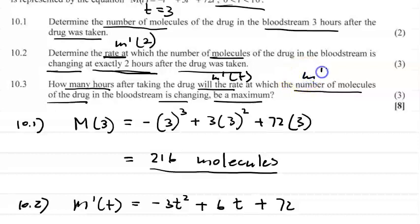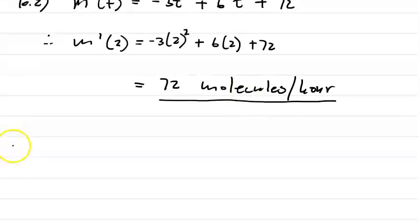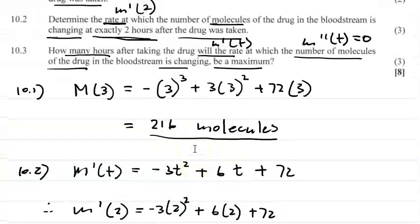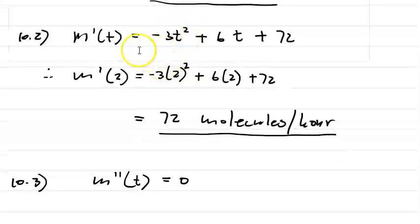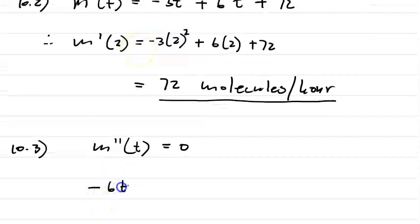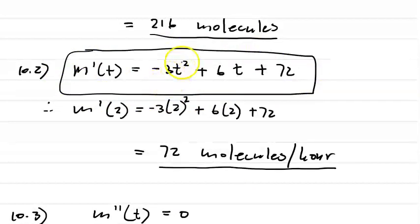So m''(T) = 0. The second derivative of m'(T) = -3T² + 6T + 72 gives us m''(T) = -6T + 6. Setting -6T + 6 = 0, we solve for T.